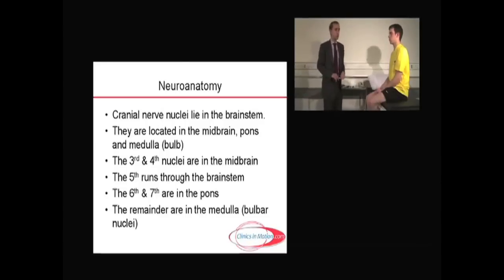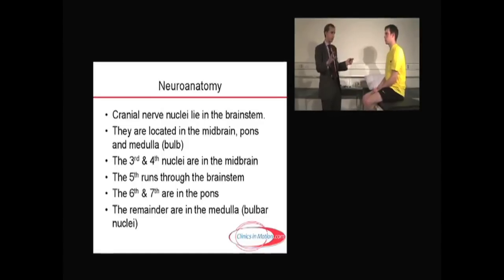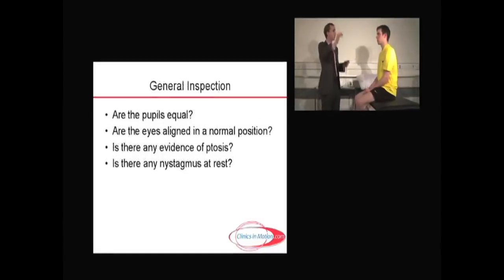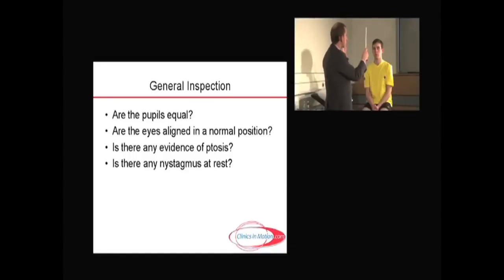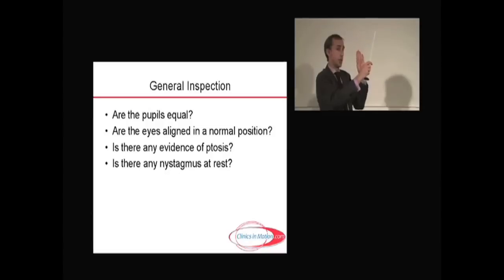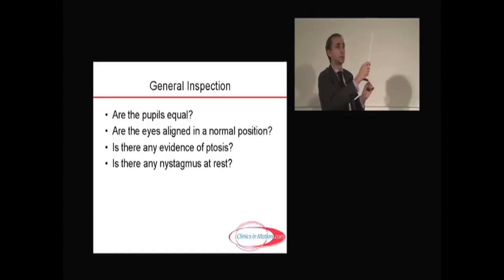When examining eye movements, the first thing to do is stand back and make general observations. Ask the patient to look straight at the stick, then note: are the pupils equal? Are the eyes sitting aligned in a normal position? Is there any evidence of ptosis or drooping of the eyelid? And is there any evidence of nystagmus at rest — that is, jumpiness of the eyes? If very subtle, these are called square wave jerks, seen in some cerebellar conditions.